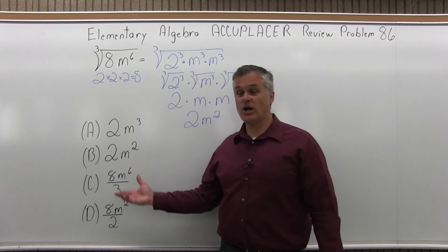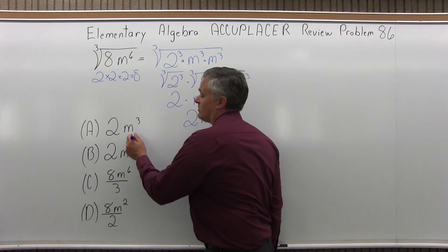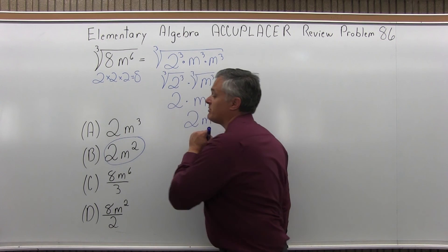Now as I look at my list of possible options, my answer of 2m squared is exactly option B. So the answer to problem number 86 is option B.